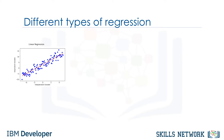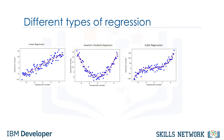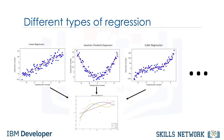In fact, many different regressions exist that can be used to fit whatever the data set looks like. You can see quadratic and cubic regression lines here, and it can go on and on to infinite degrees. In essence, we can call all of these polynomial regression, where the relationship between the independent variable x and the dependent variable y is modeled as an nth degree polynomial in x.